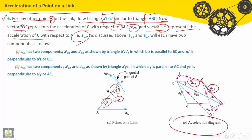As discussed above, ACB and ACA will each have two components, radial and tangential.